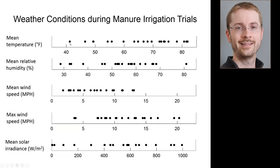To give a sense of the range of weather conditions we encountered: mean temperature ranged from 40 to just over 80 degrees Fahrenheit, relative humidity from 30 to 80%, mean wind speed from about 2 to 12 or 13 miles per hour, max wind speed up to 20 mph, and mean solar irradiance from 0 — nighttime — to 1,000 watts per square meter on a bright sunny summer day. We actually did two or three trials at night because we thought that would affect microbial inactivation. We covered a very wide range of conditions and feel confident extrapolating to general weather scenarios.